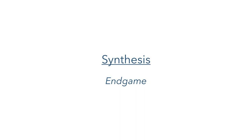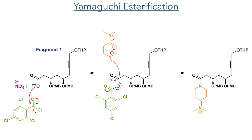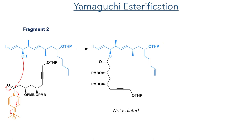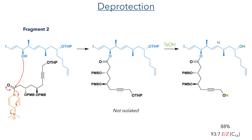With both fragments now complete, they moved into the endgame of the synthesis, starting with the Yamaguchi esterification. Fragment 1 was deprotonated by triethylamine, and the carboxylate then attacked trichlorobenzoyl chloride, forming an anhydride. This was attacked by DMAP, forming an activated ester. Fragment 2 was then added, and the hydroxyl group attacked this activated ester, forming the product, which was not isolated and was instead directly deprotected using p-toluenesulfonic acid to remove the THP groups.